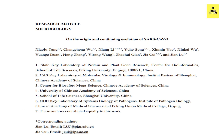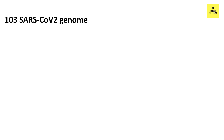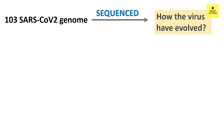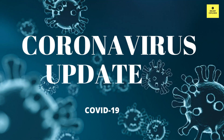For this, I am referring to the journal shown here. It was published on the 3rd of March, 2020. The researchers and scientists of this journal sequenced 103 SARS-CoV-2 genomes — that is the novel coronavirus — and they tried to understand how the virus has evolved.